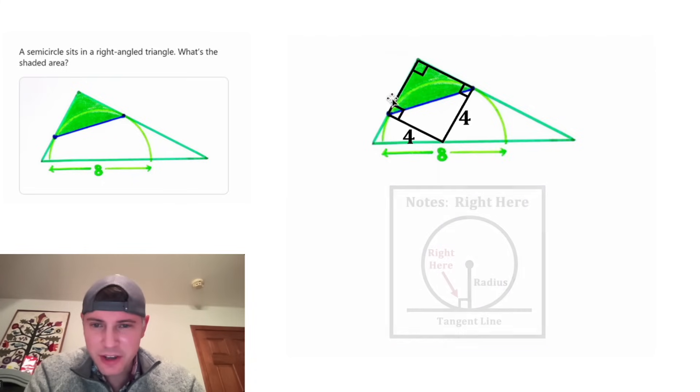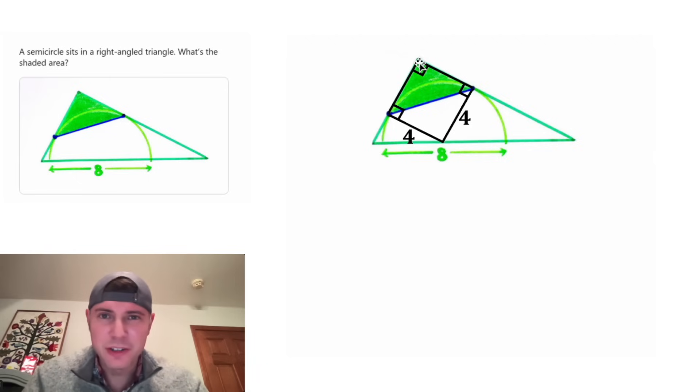Now, if we focus on this quadrilateral, the sum of the interior angles of any quadrilateral is 360 degrees. If these three are right angles, then this one has to be a right angle. So this shape is a rectangle. In every rectangle, opposite sides are congruent. So if this side is 4, this side is also 4.